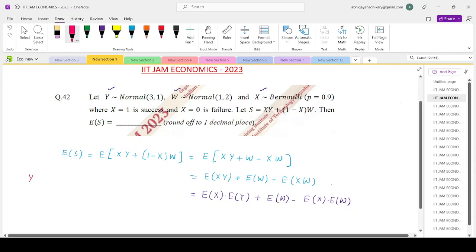Now let's have a look at them one by one. Y follows a normal distribution with mean 3 and variance 1, so expectation of Y is 3. W follows a normal distribution with mean 1 and variance 2, so expectation of W is 1.